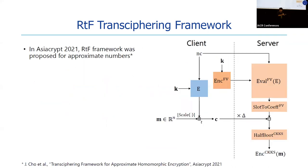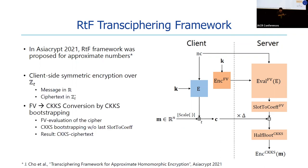For real numbers, in Asiacrypt 2021, Cho et al. proposed the RTF framework, which is a transcyphering framework for approximate numbers. On the client side, the real messages are scaled and rounded, converted into an integer modulo t, and a key stream of a cipher is added. On the server side, HE evaluation of the cipher and CKKS bootstrapping result in a CKKS ciphertext of the message.